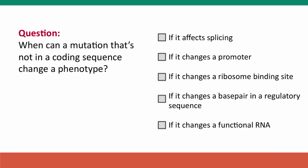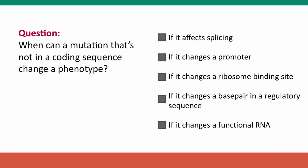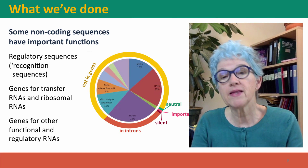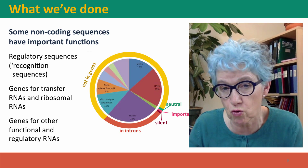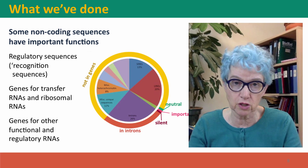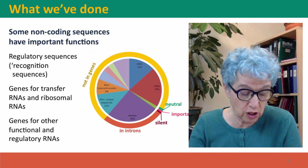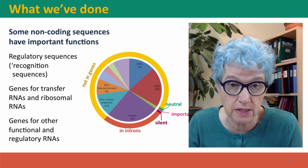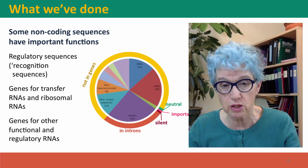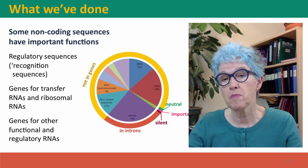Here's a summary question: when can a mutation that's not in a coding sequence change a phenotype? All of the answers are correct — all of these are ways that mutations can change a phenotype even though they're not in a coding sequence. To summarize, non-coding sequences can have important functions that can be changed and destroyed by mutations: regulatory sequences and recognition sequences in DNA such as transcription factor binding sites; genes for transfer RNAs and ribosomal RNAs that function in protein synthesis; and genes for other kinds of functional and regulatory RNAs. This isn't an exhaustive list — there are lots of other sequences that don't code for protein but have important functions — but we don't have time to talk about all of them.